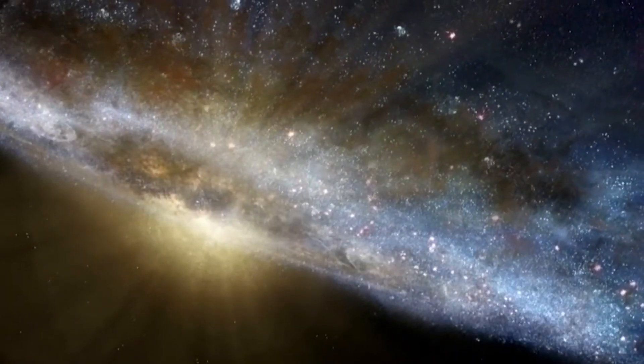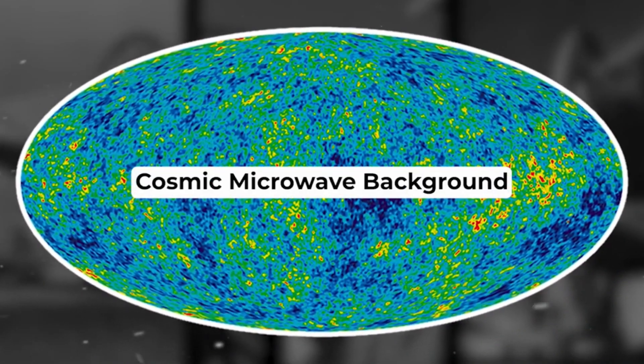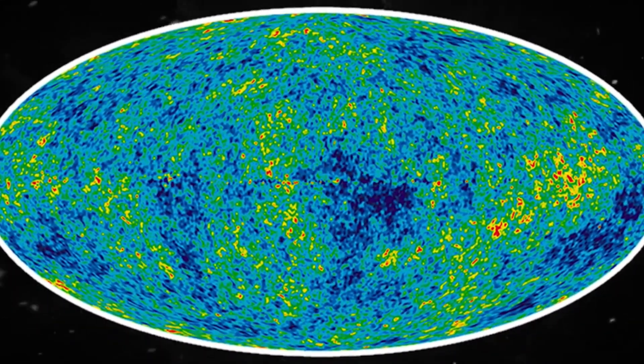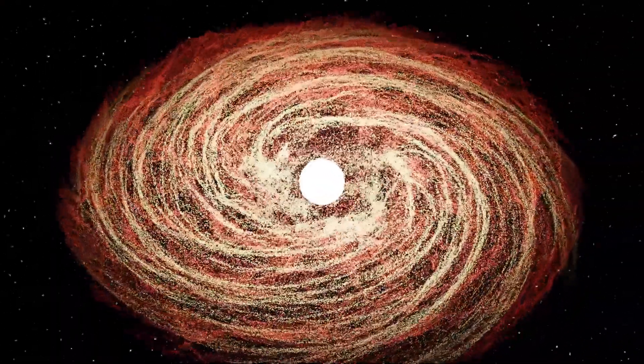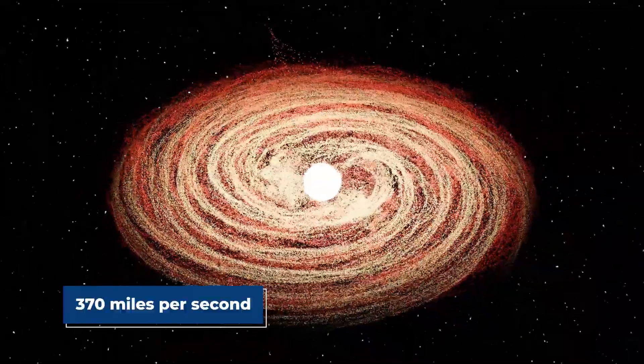The Great Attractor was initially discovered in the 1970s when astronomers created detailed maps of the cosmic microwave background, which is the radiation that fills the universe and can be detected in every direction. They noticed that it was slightly warmer on one side of the Milky Way than the other. This finding implied that the galaxy was moving through space at a brisk clip of about 370 miles per second.